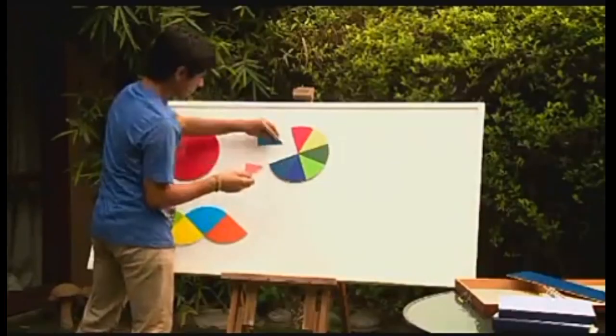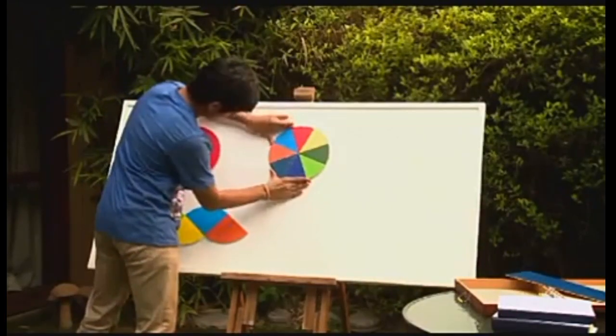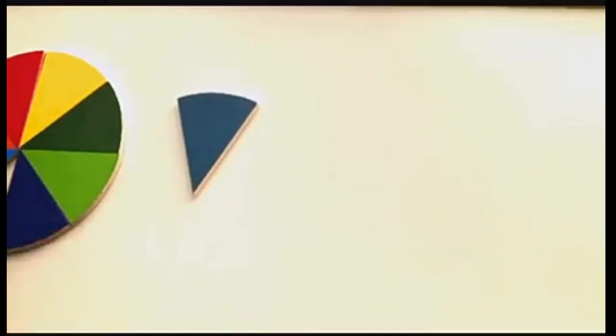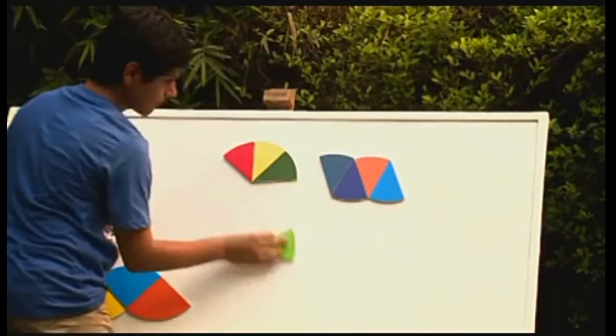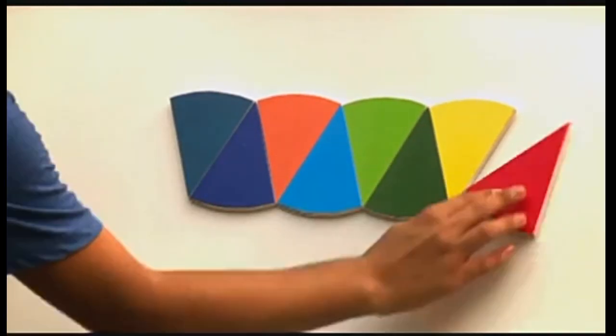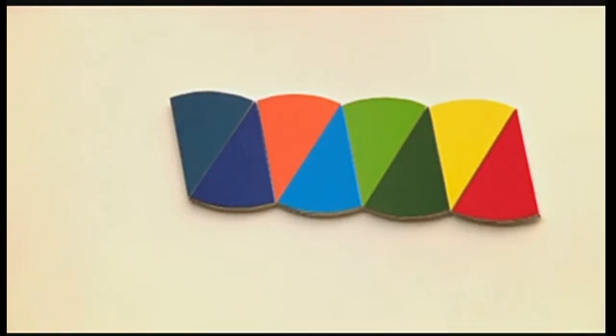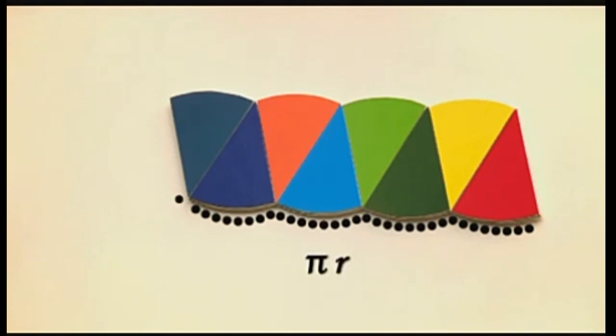Now he constructs yet another circle with eight equal segments. He then rearranges them to form this shape. Now if we look closely, we'll see that the scalloped edge at the bottom is looking straighter. Other than that, the length of the scalloped edge at the bottom is still πr, and the blue side is the radius of the circle, which is r, and is now a bit more upright.